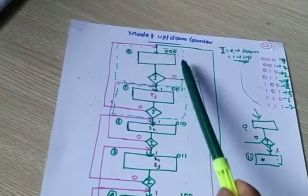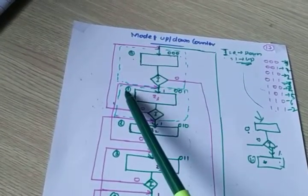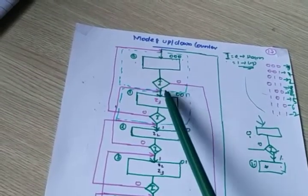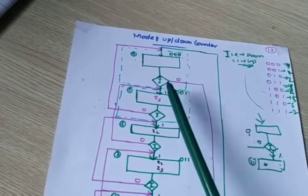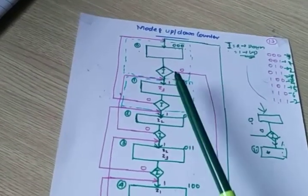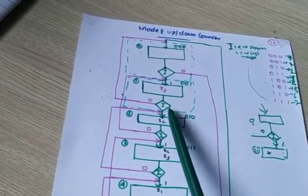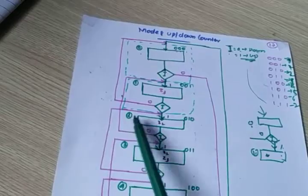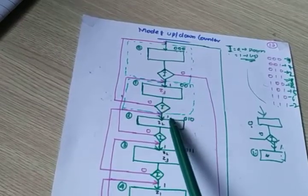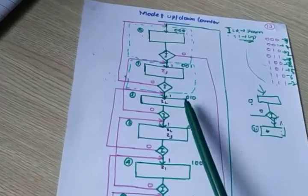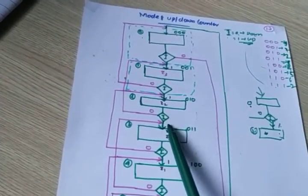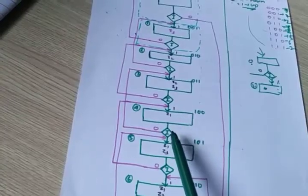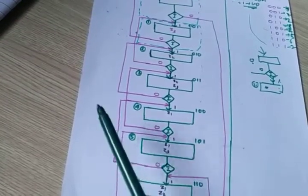Here: 0th state is 000, then next state 1 is 001, represented by the decision box. Decision box: 1 is up counting, 0 is down counting. So state 1, with i=1 up counter, goes to state 2 (010). From Z2 to Z3 when i is 1, it goes to Z3. When condition is 1 again, it goes to 4th state. Again if condition is 1, it goes to 5th state. It is an up counter.